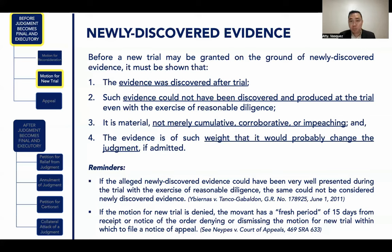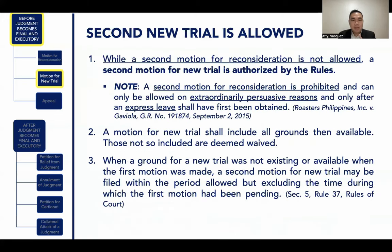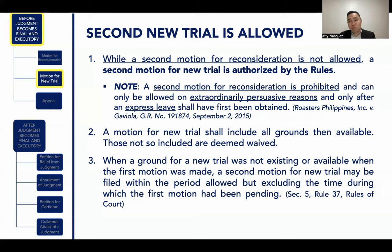If your motion for new trial is denied, the movant has a fresh period of 15 days from receipt or notice of the order denying the motion for new trial, within which he may file a notice of appeal. Please take note that a second new trial is allowed. While a second motion for reconsideration is not allowed, a second motion for new trial is authorized by the Rules of Court. When a ground for new trial was not existing or available when the first motion was made, a second motion for new trial may be filed within the period allowed, excluding the time during which the first motion had been pending.